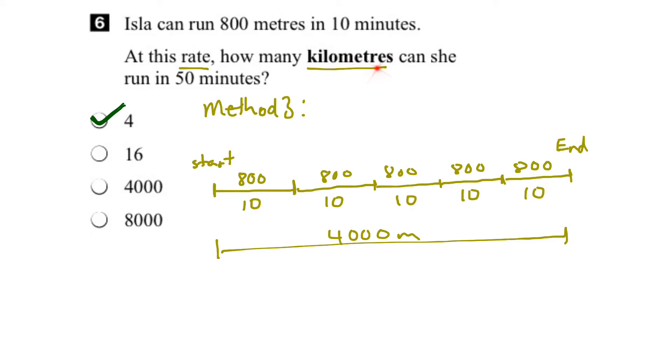And of course, we want the answer in kilometers. So we say that we've got 1000 meters in every kilometer. So what we can do is simply move the decimal, which is right here, and move it to the left one, two, three places. So that leaves us with four kilometers. And again, we see that we have the same answer.